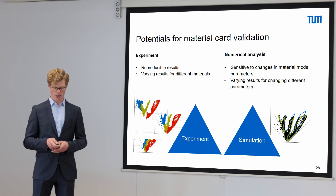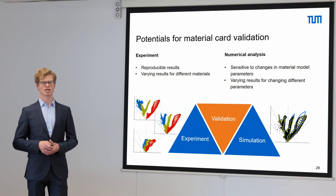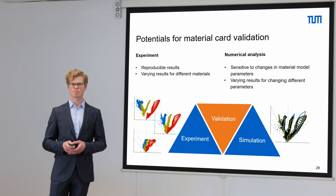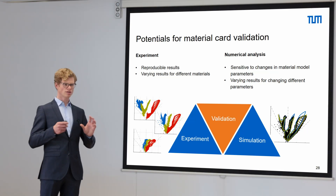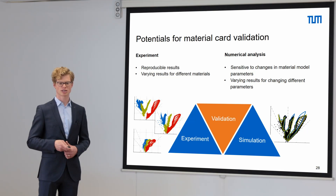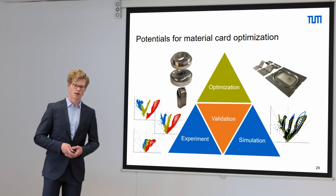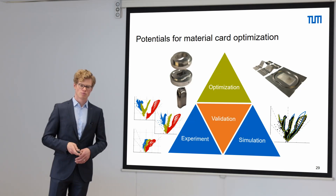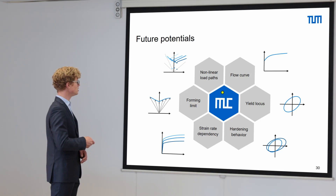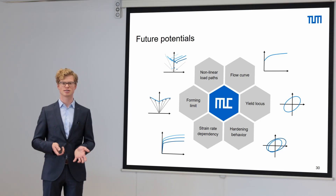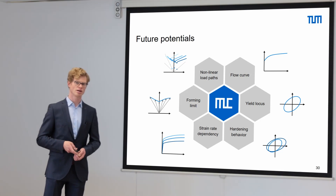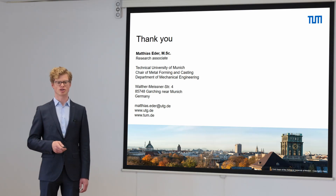Of course it is not only possible to assess the quality of existing models — we can also use this data to improve material models by using an optimization strategy. With an optimization strategy we have future potentials not only to optimize the yield locus description, but also the hardening behavior or the flow curve of the material model. Furthermore we can investigate the strain rate dependency or, regarding failure, we can investigate the linear and nonlinear forming limit. Thank you very much for listening and I look forward to an interesting discussion.